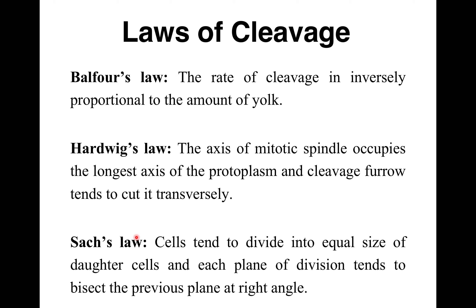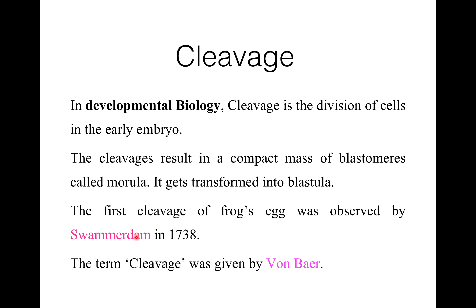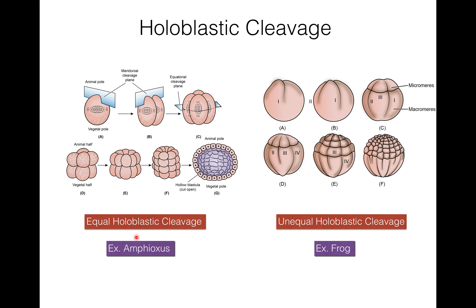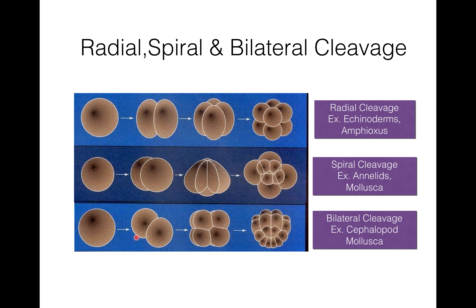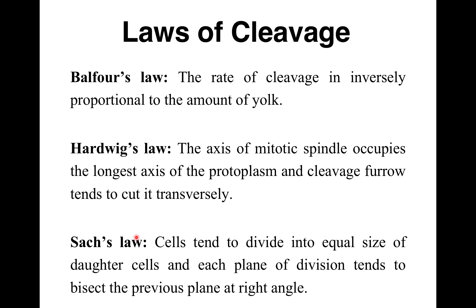Sachs' law states that the plane of new cleavage or division is at a right angle to the previous one. Cells tend to divide into equal-sized daughter cells, and each plane of division tends to bisect the previous plane at a right angle. The blastomeres have a tendency to form similar cells. Today I discussed what cleavage is, the planes of cleavage, and the patterns of cleavage — holoblastic, meroblastic, determinate, indeterminate, radial, spiral, and bilateral — as well as three laws: Balfour's law, Hertwig's law, and Sachs' law.